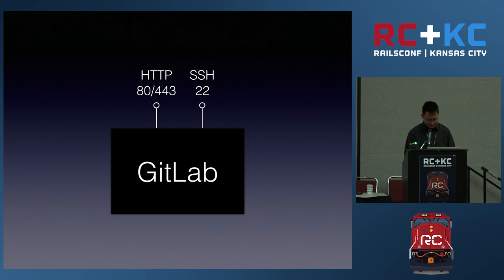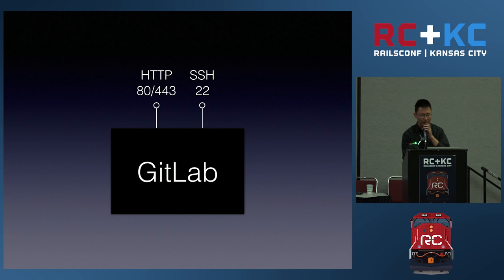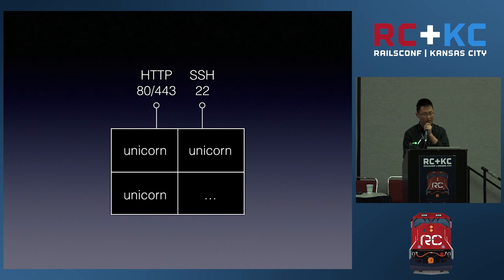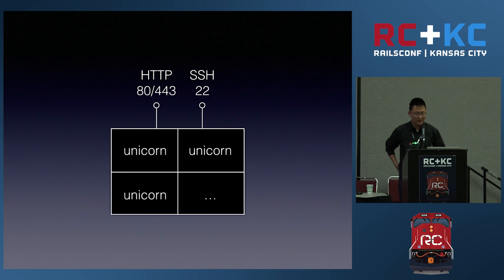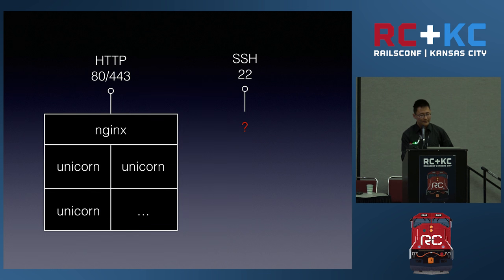How do we do this? We first consider the problem on the front end. When a request comes in, it's either HTTP or SSH. As Rails developers, we're most familiar with HTTP, running as Unicorn instances. We just put load balancers in front of them, set upstream in the configuration to point to the Unicorn servers in the back, and we're done.